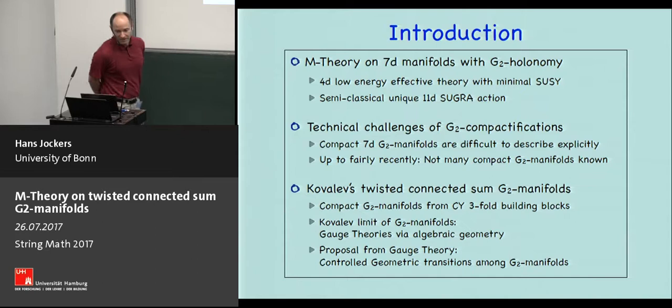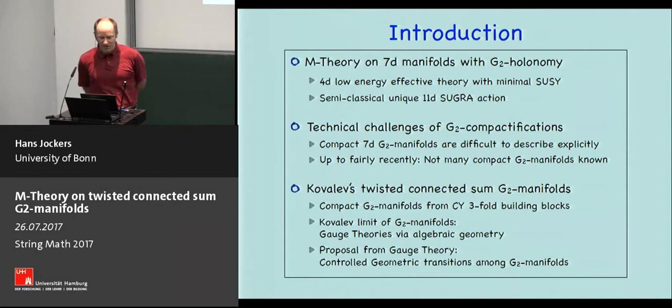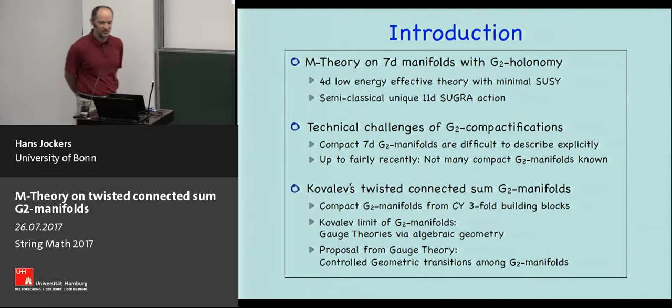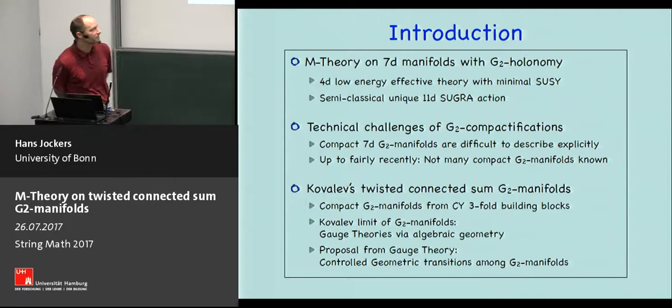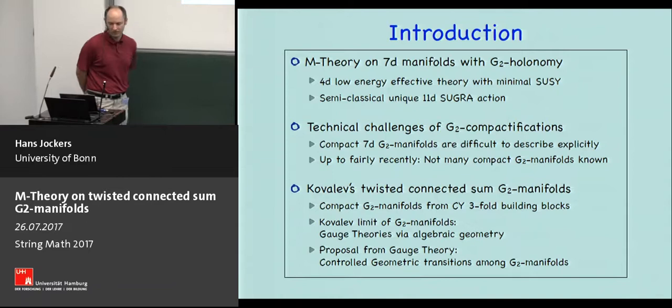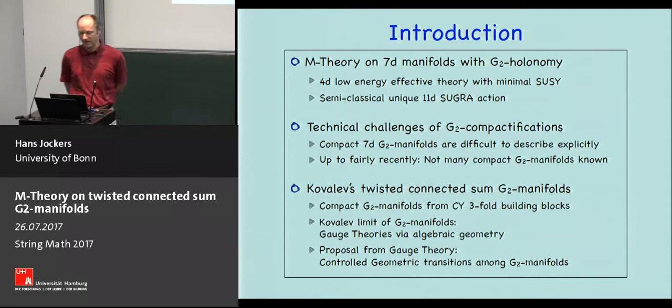However, it comes with technical challenges because compact seven-dimensional G2 manifolds are real manifolds and therefore difficult to describe. Up until recently there had not been many examples of such geometries. What I'm going to present is how we can use a fairly new construction — namely Kovalev's twisted connected sum construction — to get a handle on seven-dimensional G2 manifolds and the resulting effective action.